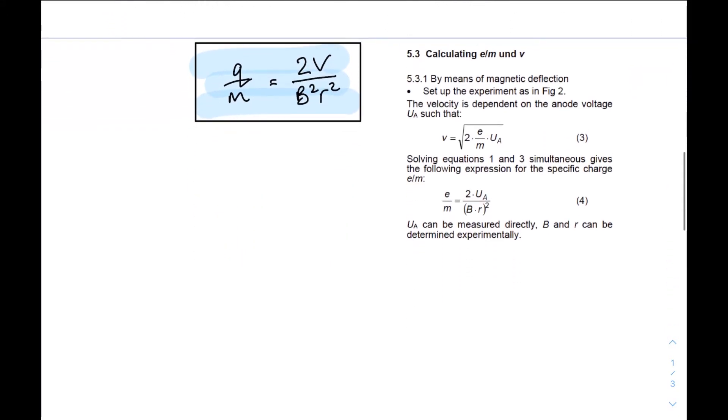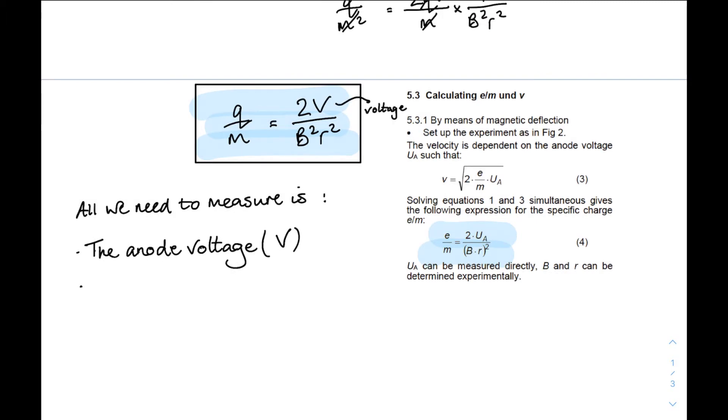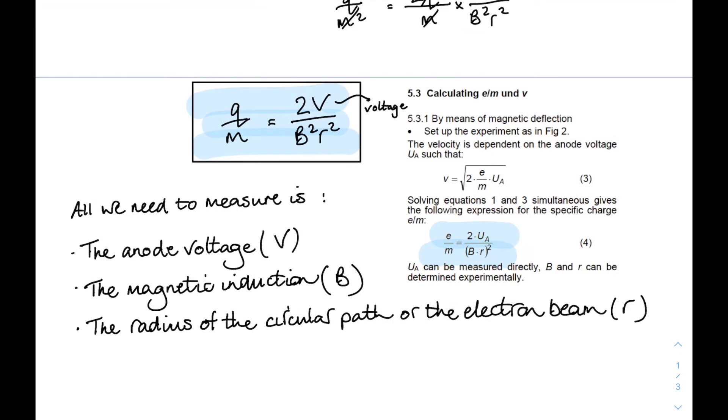Now that relationship is in the manual for the deflection tube. It's not derived very well, but there it is. That's the same relationship. So all we need to measure is the potential difference across the electron gun, that's the anode voltage. The size of the magnetic field, or the magnetic induction, to give it its proper name, that's B. And the radius of the electron beam, the circular path that the electron beam follows. That's all we need to measure.